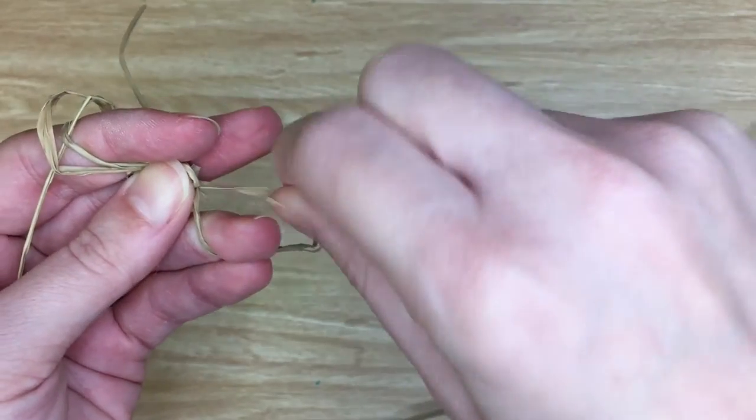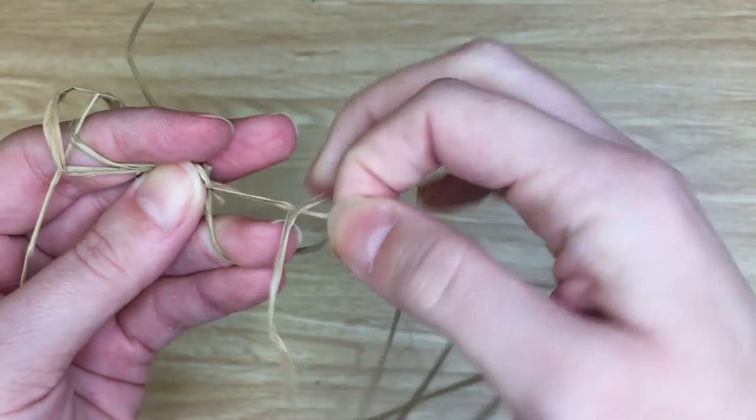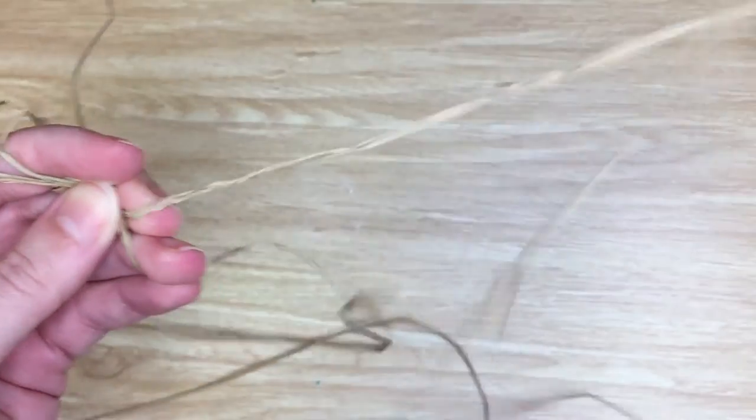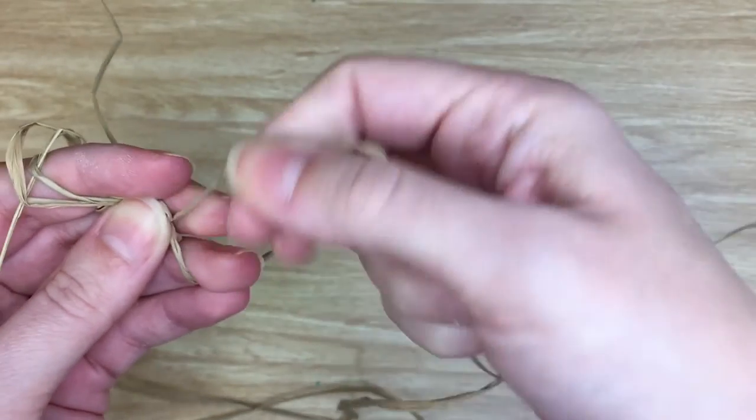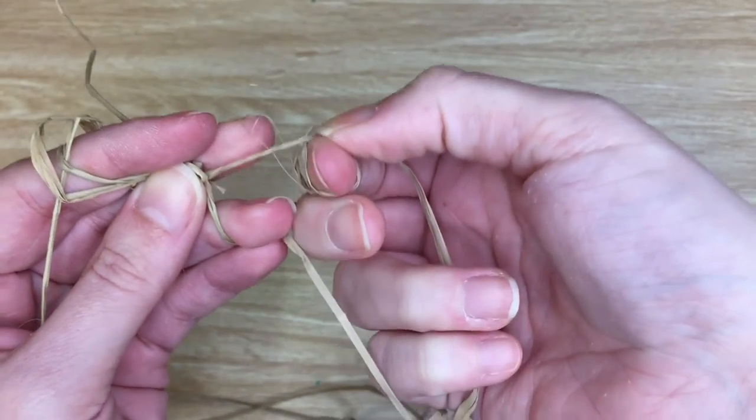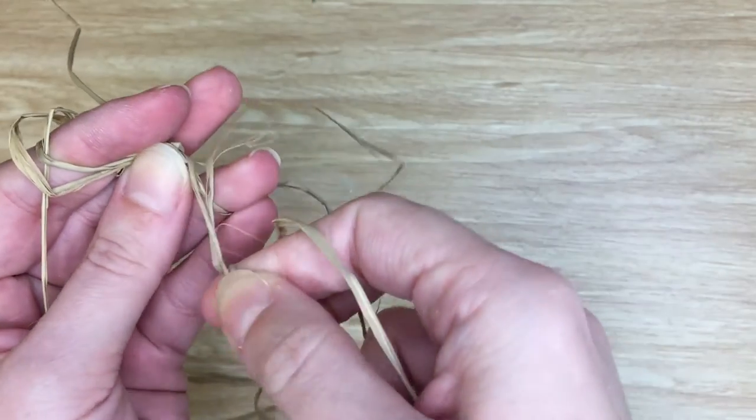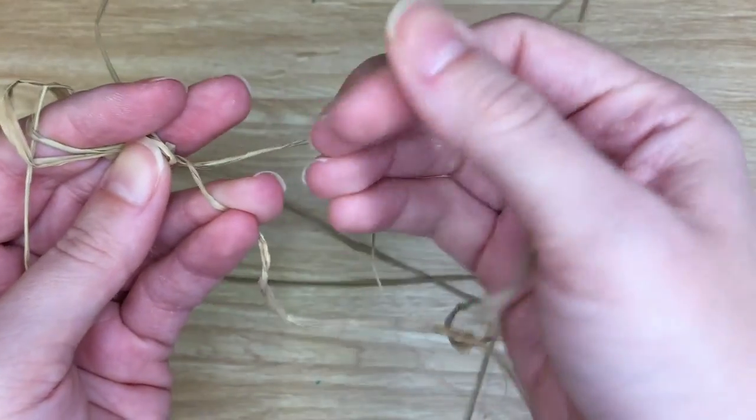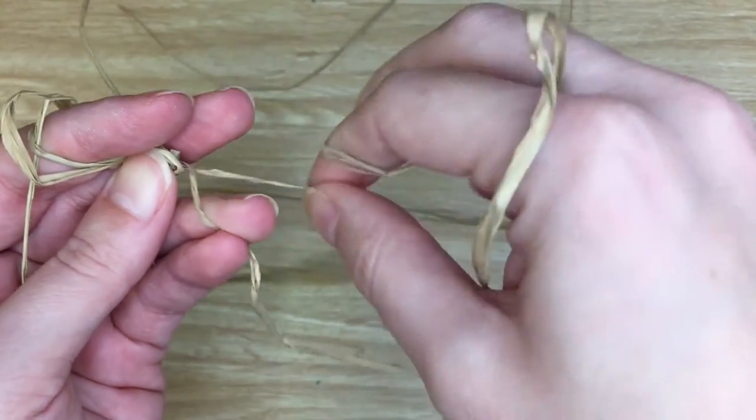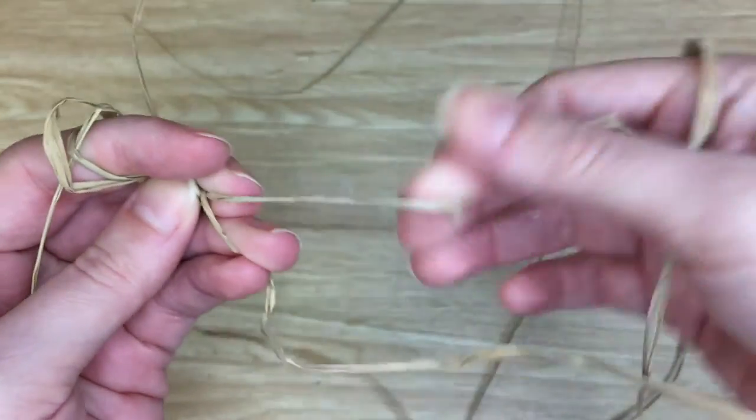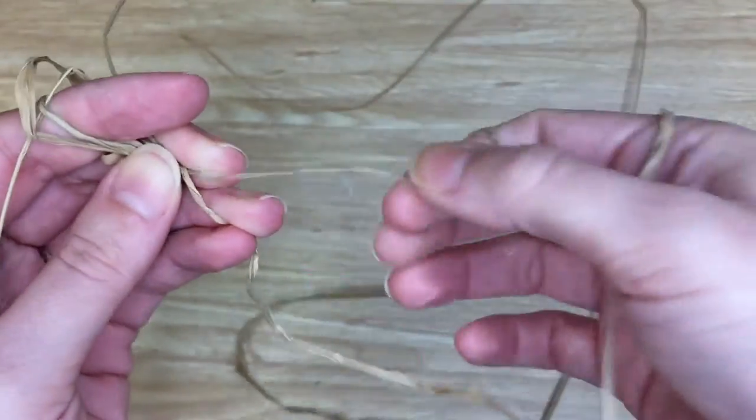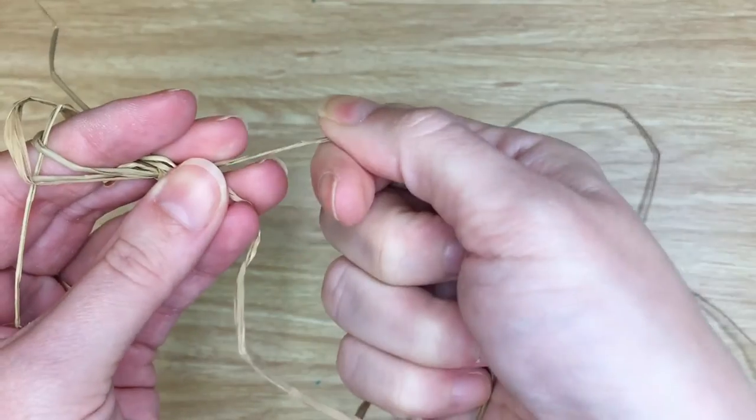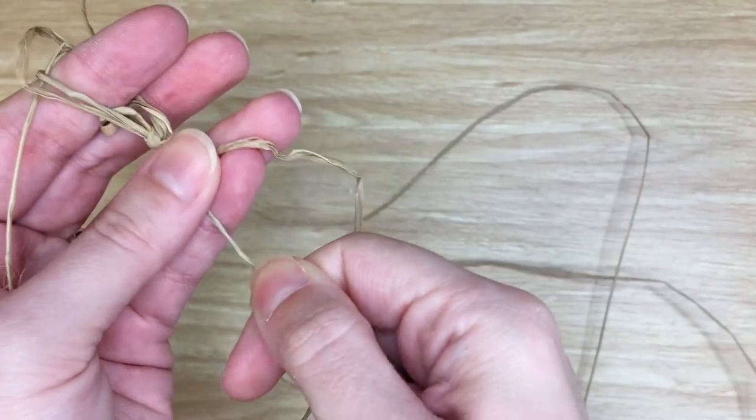Now this is the top piece, so again we're going to twist it away from us. Now that it has a good twist, we're going to pull it towards us and then this is again our top piece. Twist away, pull towards.